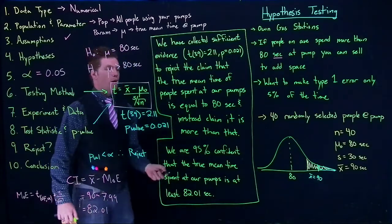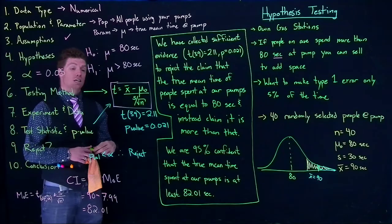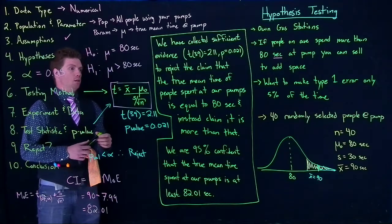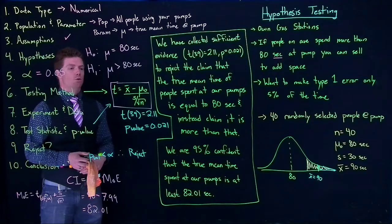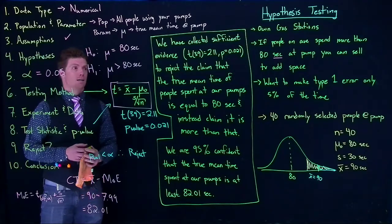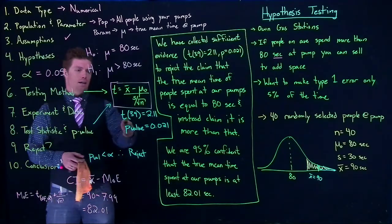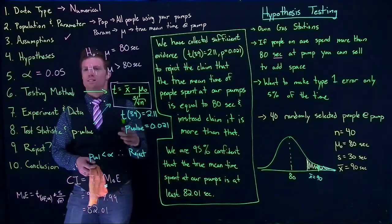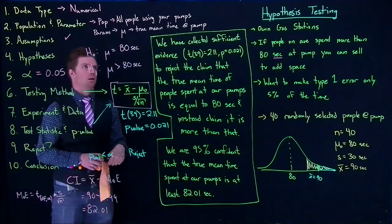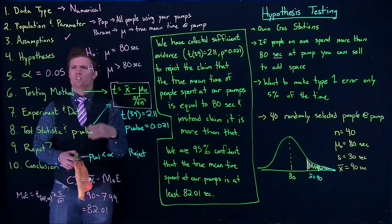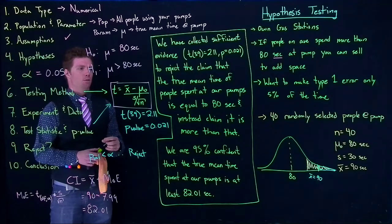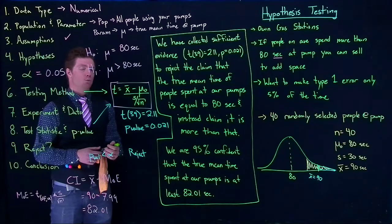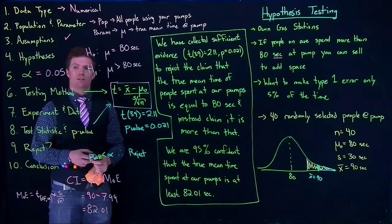And that is our entire conclusion for hypothesis testing when we reject the null hypothesis. We'll do more examples — I'll show you how to do this with software, since that's how we'll calculate t-values, p-values, and more. I wanted to go through it step by step on the board as well. I hope this helps, and we'll do more examples in other videos.